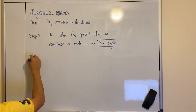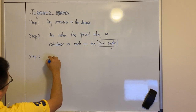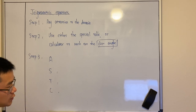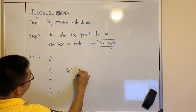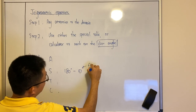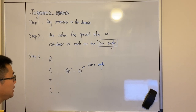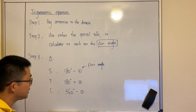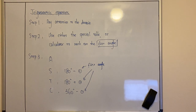Once you know the first angle, then Step 3 — very important — you're going to use All Station To Central again to work out the second angle. If the question is a sine question, then the second angle is always 180 degrees minus theta, where theta is the first angle from your calculator or special angle table. If you have a tangent question, the second angle is 180 degrees plus theta. For cosine, it's 360 degrees minus theta.